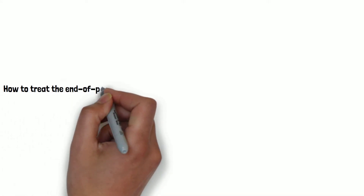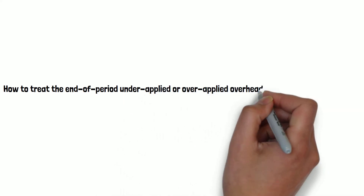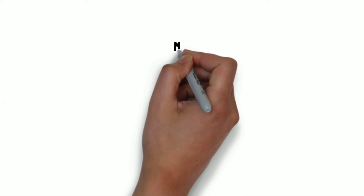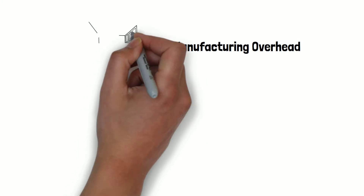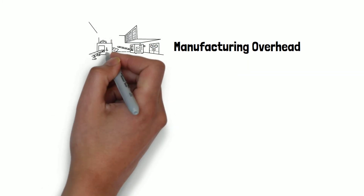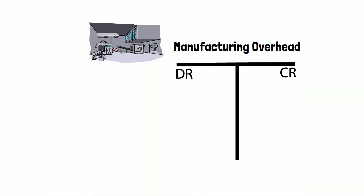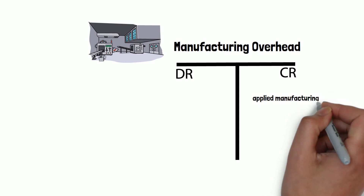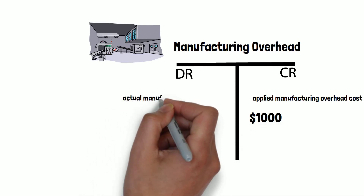Today I'm going to show you how to treat the end-of-period under-applied or over-applied manufacturing overhead costs with the Cost of Goods Sold method. We are using a T-account to illustrate the method. On the T-account, the left side is the debit side and the right side is the credit side. During the year, if you apply manufacturing overhead to the work-in-process inventory, you credit manufacturing overhead — suppose that amount is one thousand dollars.